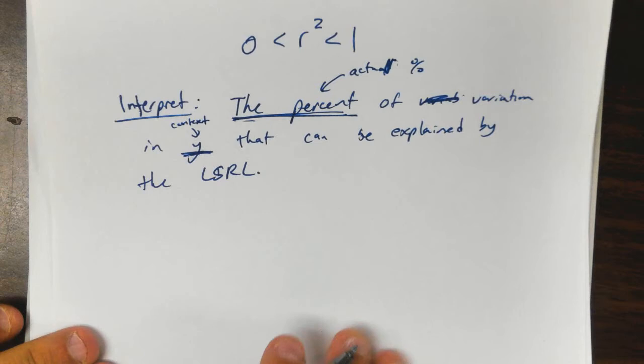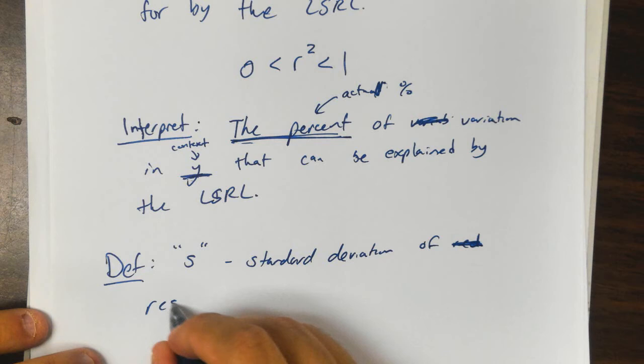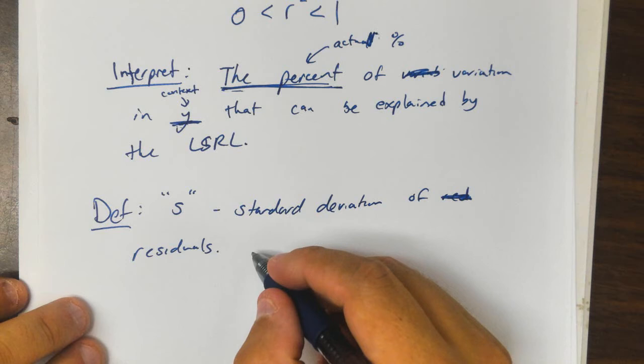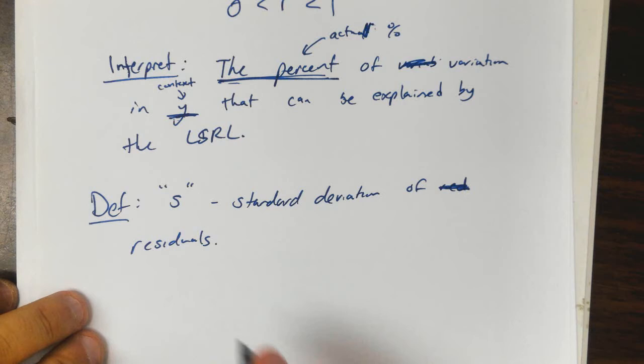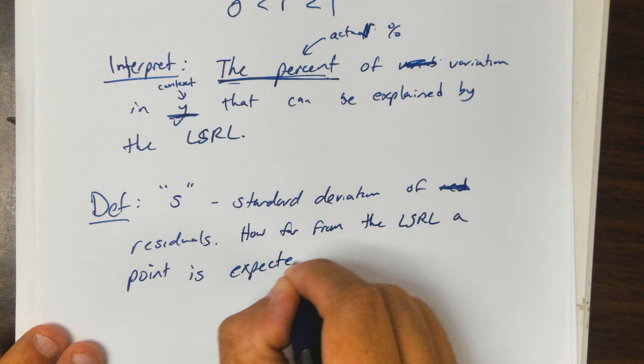Now let's talk about S, which is the standard deviation of residuals. This is how far away from the least squares regression line you would expect any point to be. So it's a measure of how far from the least squares regression line a point is expected to be.